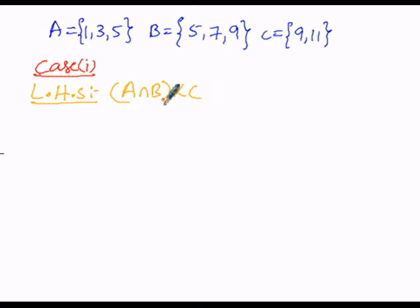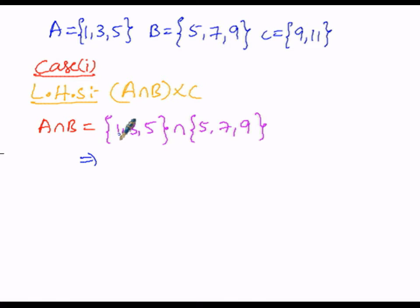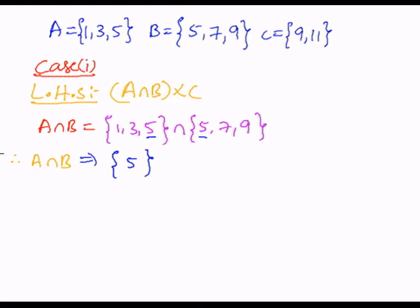First, let us solve A intersection B, which is in the bracket. Set A elements are {1, 3, 5} intersected with set B elements {5, 7, 9}. To find the intersection of these two sets, we choose the common elements. Here, 1 is in set A but not in B; 3 is in A but not in B; 5 is common in both. Therefore, A intersection B equals {5}.